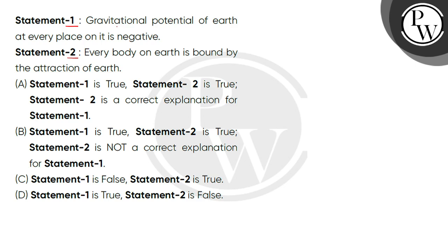Statement 1: Gravitational potential of earth at every place on it is negative. Statement 2: Every body on earth is bound by the attraction of earth. So first of all,